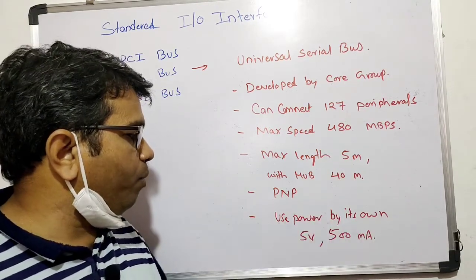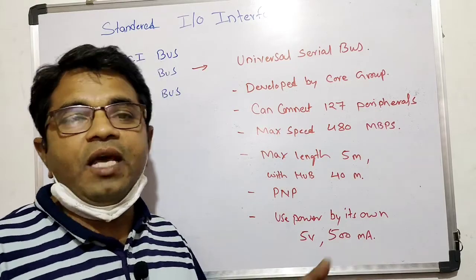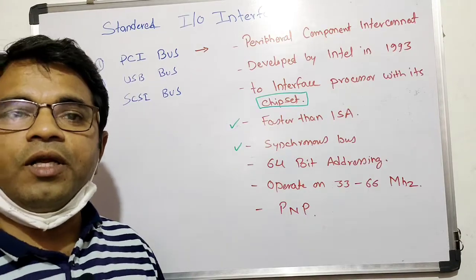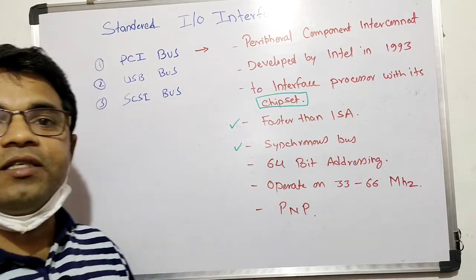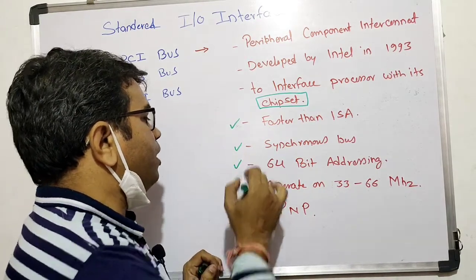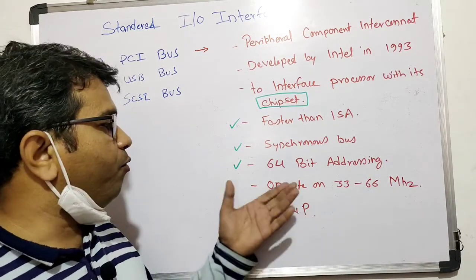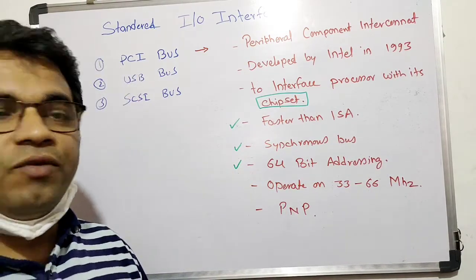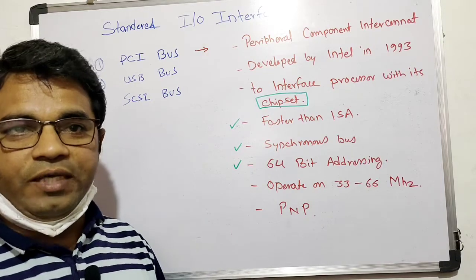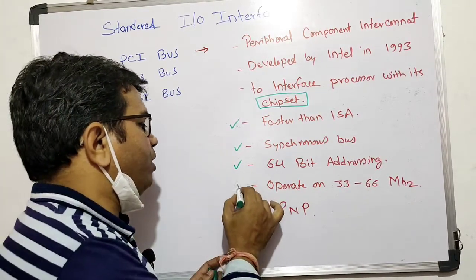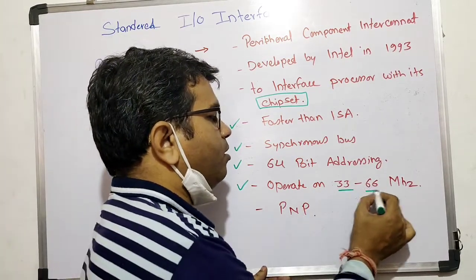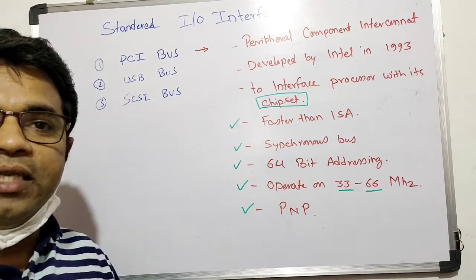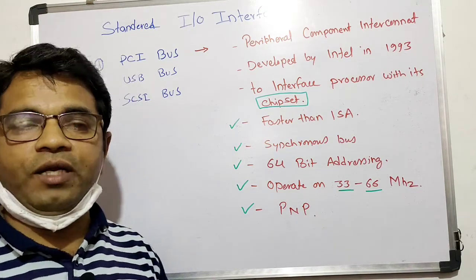USB provides 5 volts and 500 milliamperes of power, so devices running on this power do not need a separate power supply. It works on clock signals and does not need any interrupt or handshaking signals. It uses 64-bit addressing, meaning its width is quite wide and it can connect with a wide variety of devices. It operates at a frequency of 33 to 66 megahertz and has the plug-and-play feature — you can connect any device anytime during full operation of the computer.